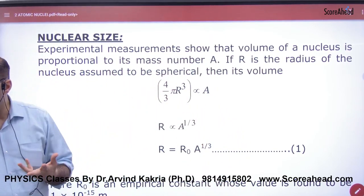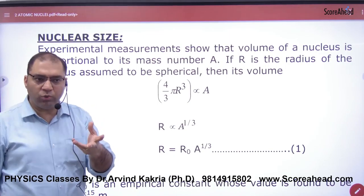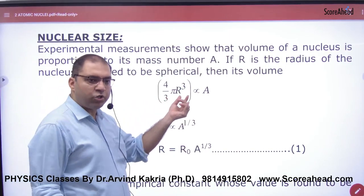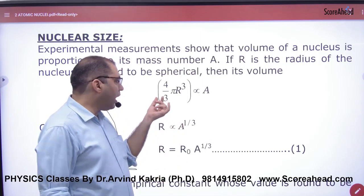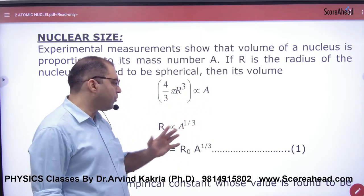The volume will be bigger. So 4/3 pi r³ is proportional to A. So r is directly proportional to A raised to power 1/3.